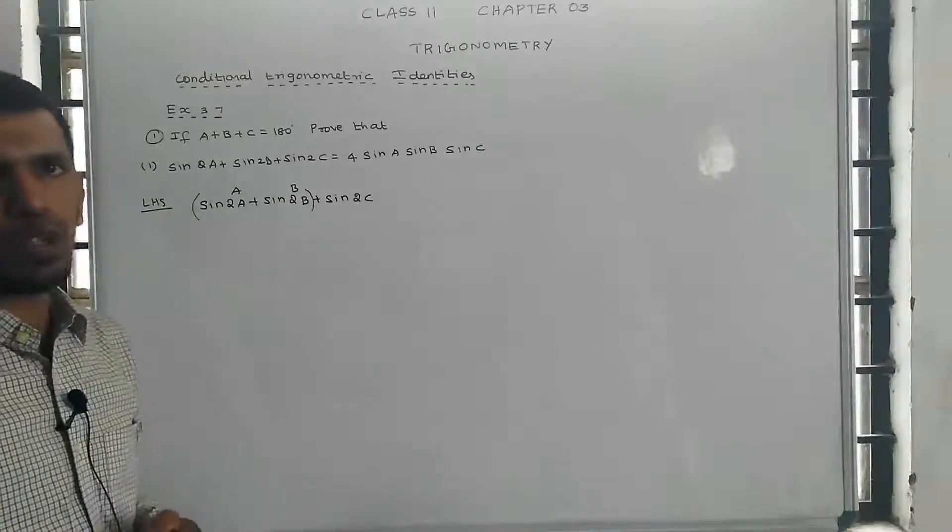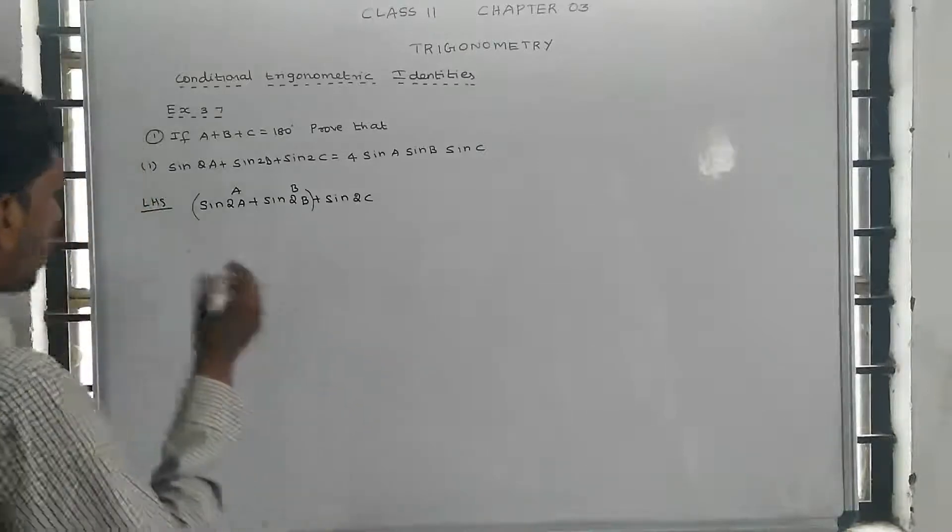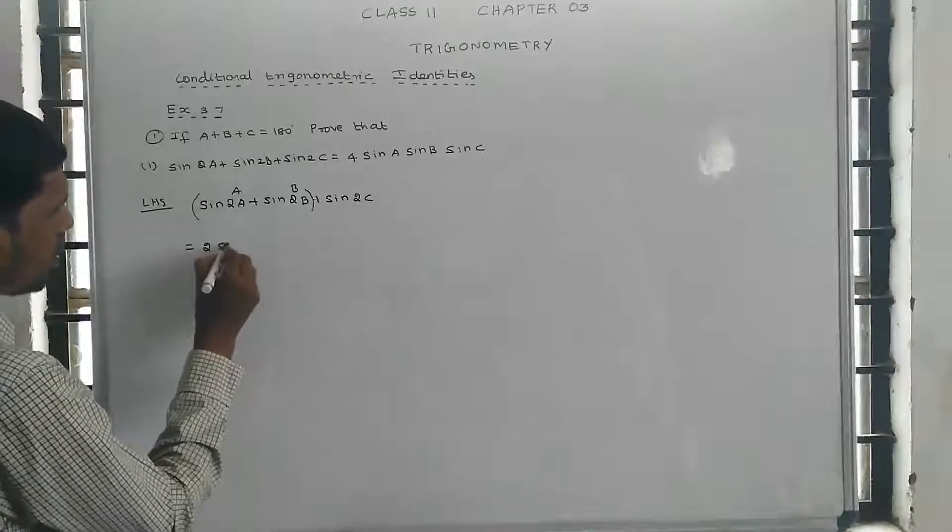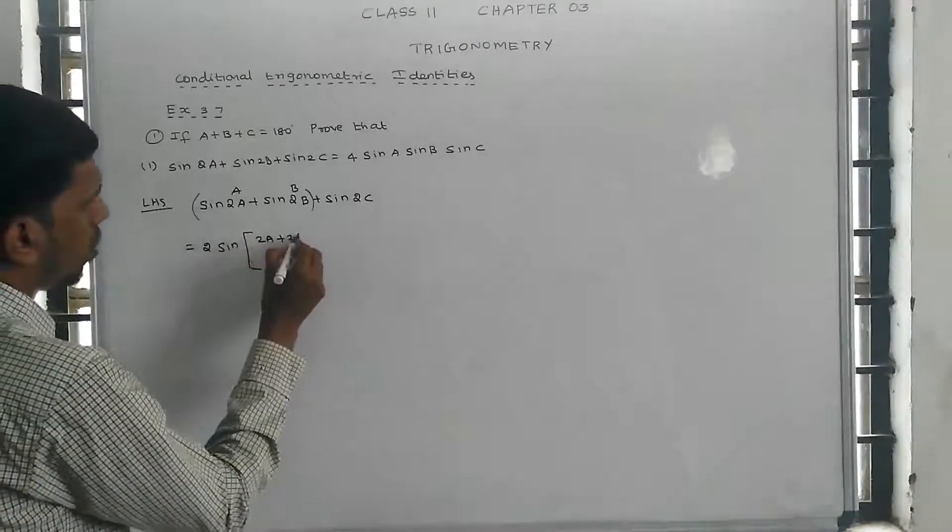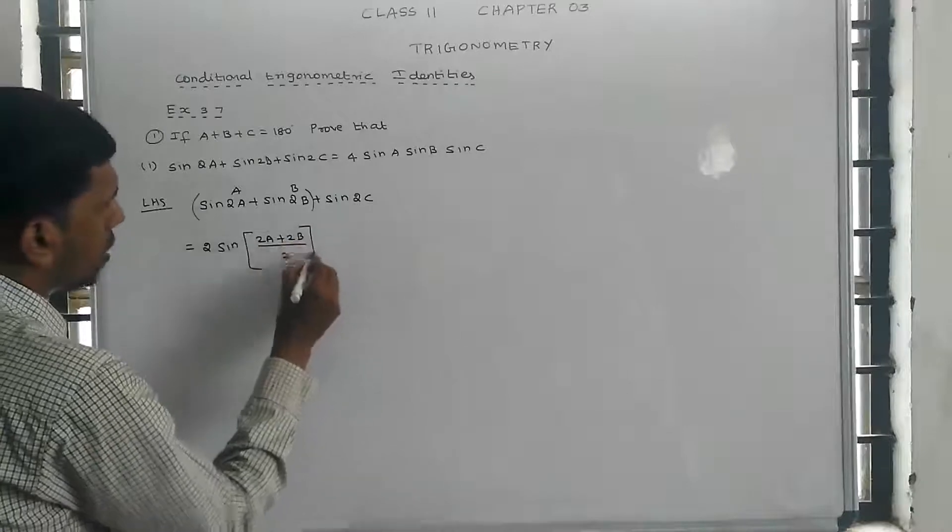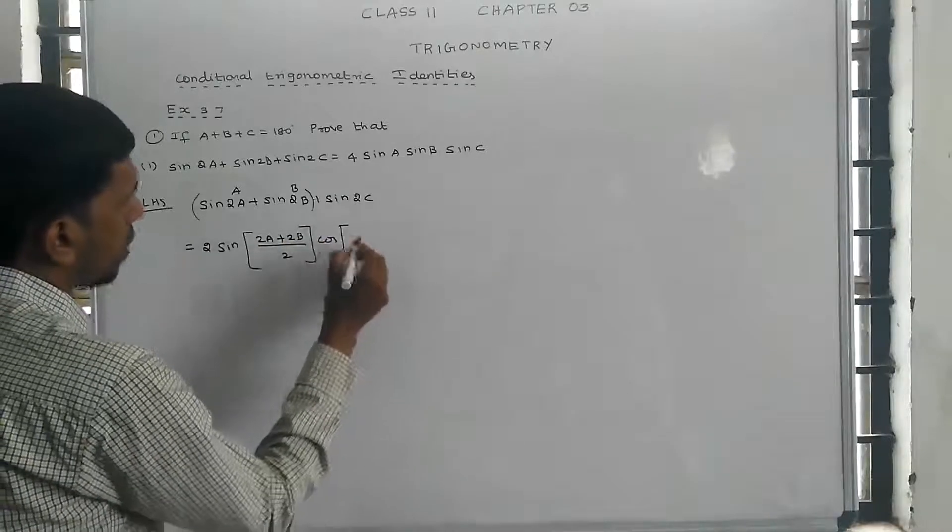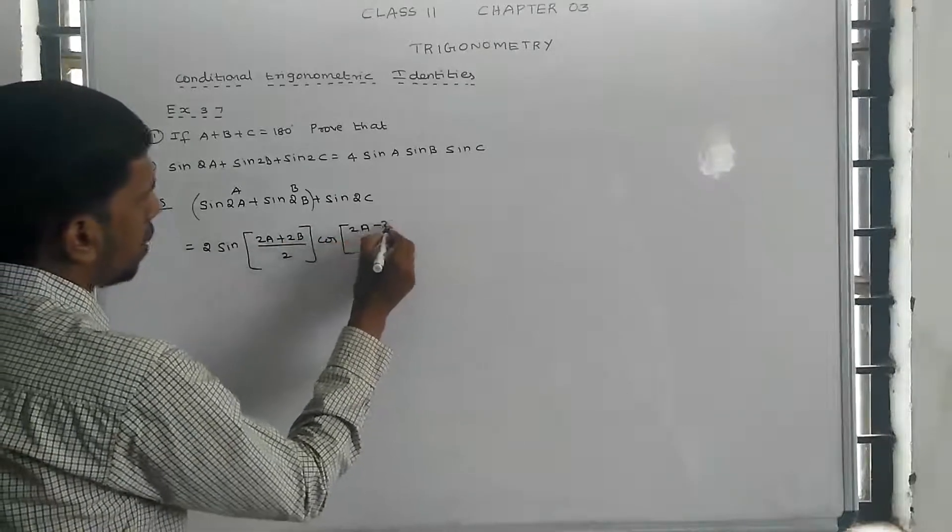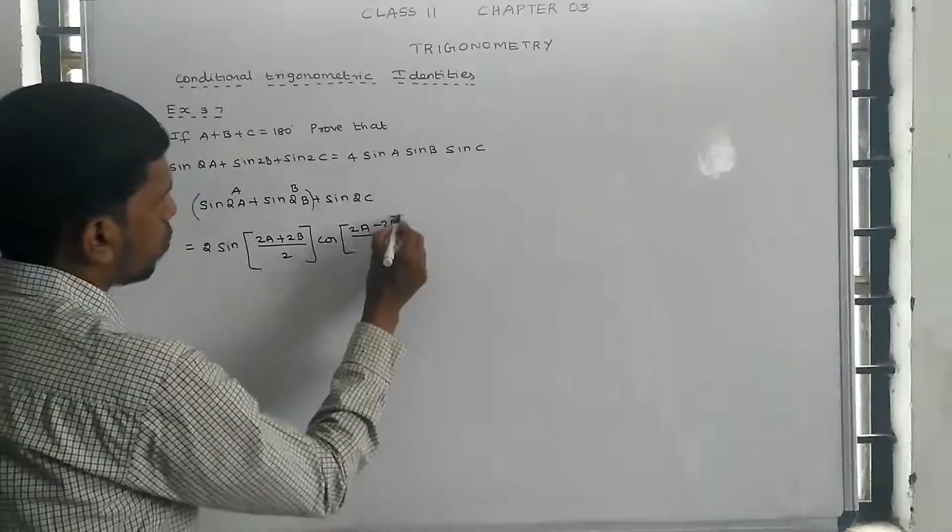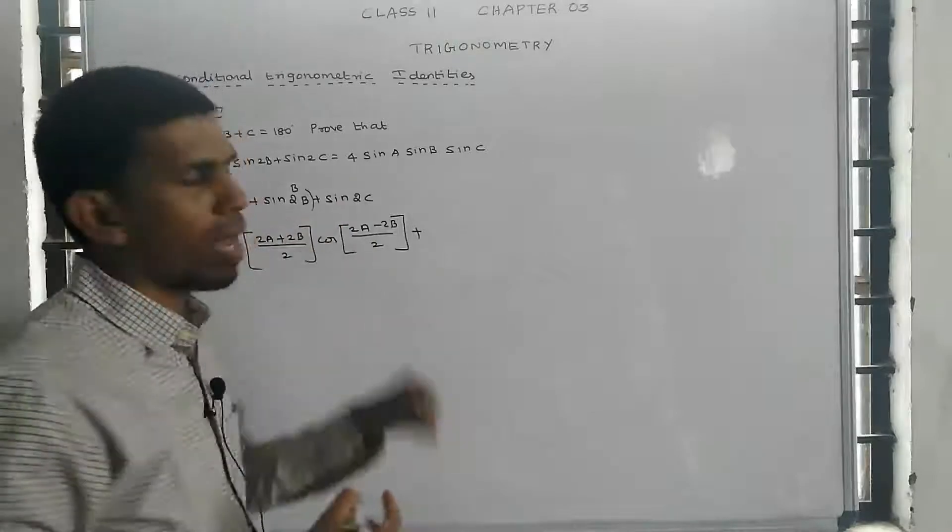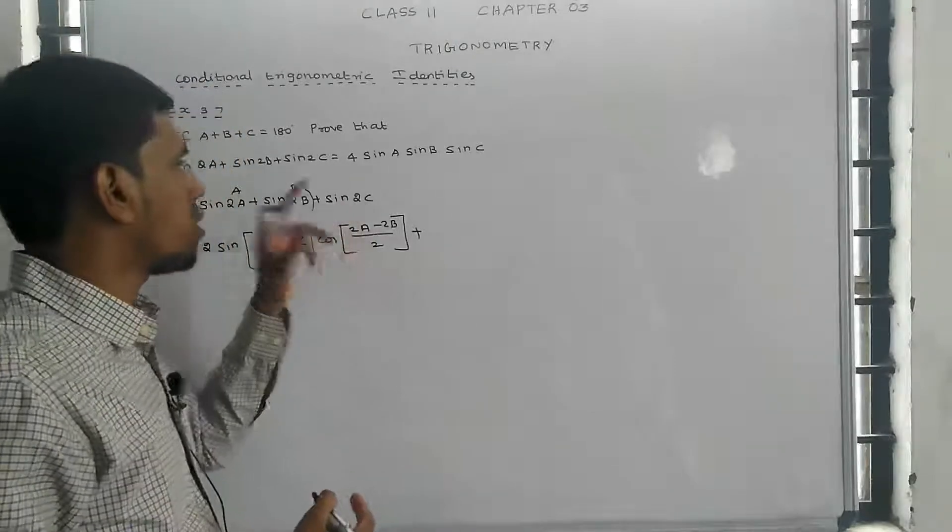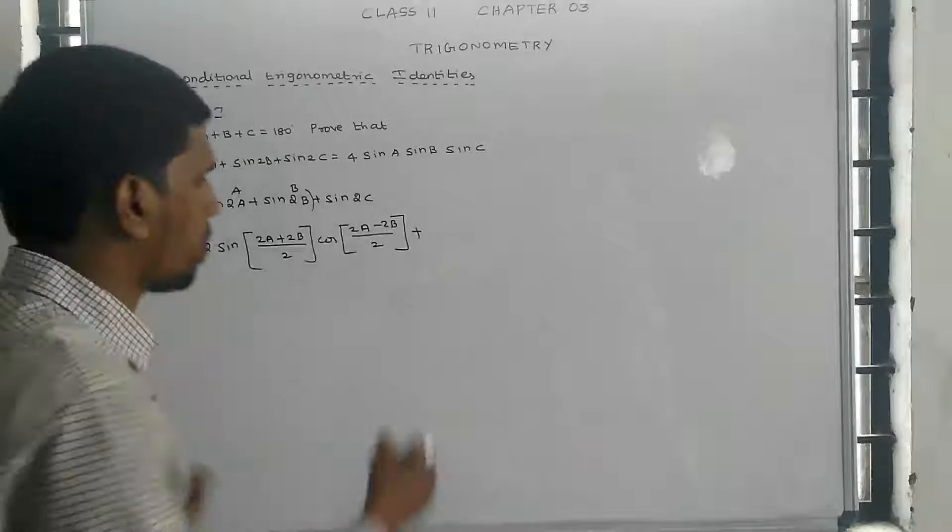The sin A + sin B formula is: 2 sin((A+B)/2) cos((A-B)/2). So this equals 2 sin((2a+2b)/2) cos((2a-2b)/2) plus sin 2c. For sin 2c, we use the formula 2 sin c cos c.